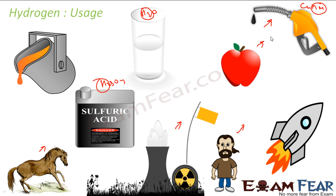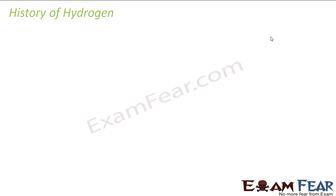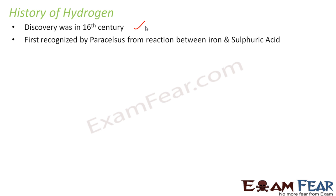Just to give you an idea of what hydrogen is and its uses — why should we study hydrogen? We know it is used in various places. Let's also talk a little about the history of hydrogen. Hydrogen was discovered in the 16th century. All elements with lower atomic numbers or mass were discovered earlier, while those with heavier atomic masses were discovered later since chemists didn't have the equipment. It was first recognized by Paracelsus through the reaction between iron and sulfuric acid.